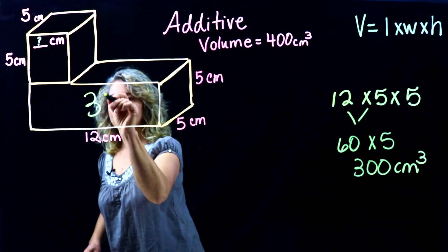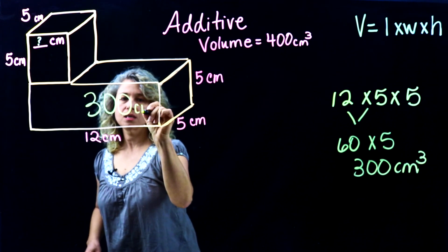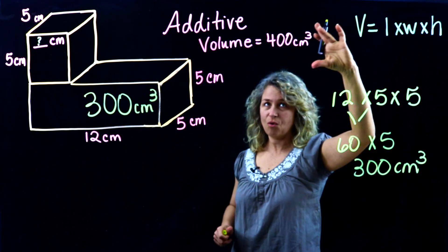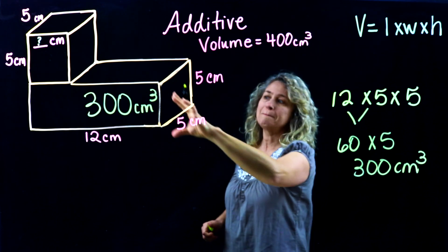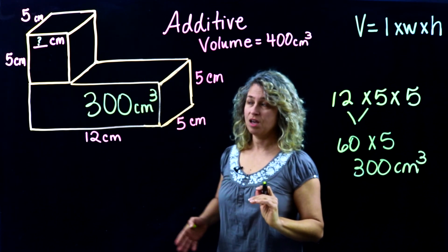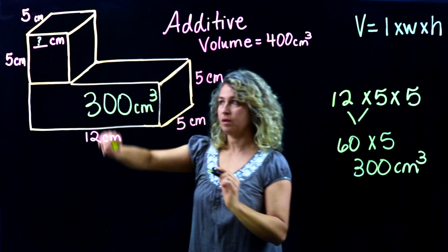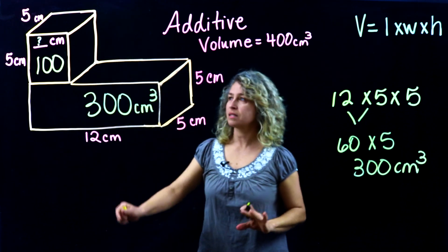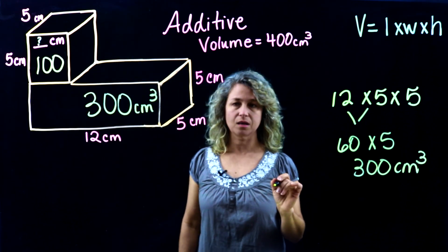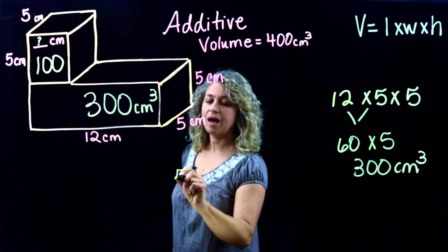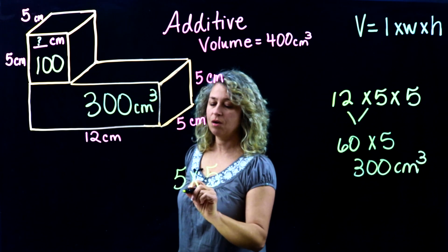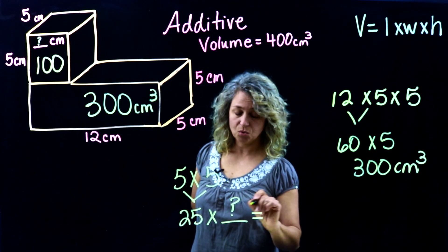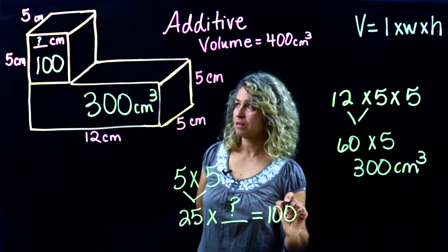So this shape is 300 centimeters cubed. Going back to the given information — the total is 400 — we know that 400 minus 300 is 100, so this second shape has to be 100. Looking at the given values for that shape, we have 5 times 5, and 5 times 5 is 25.